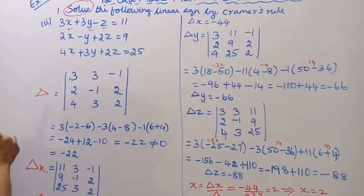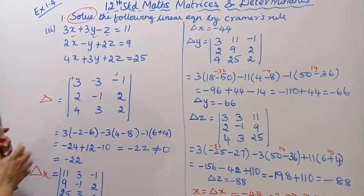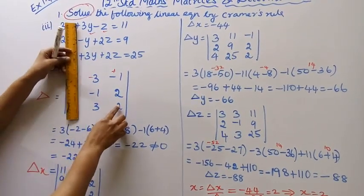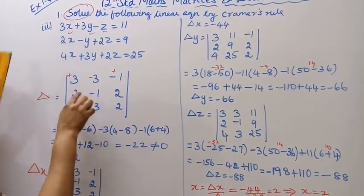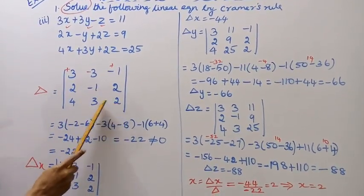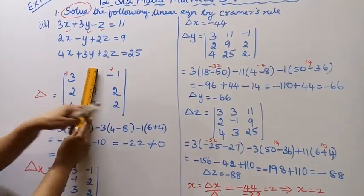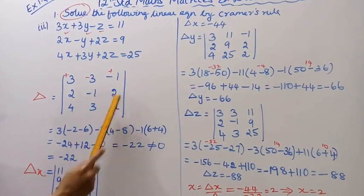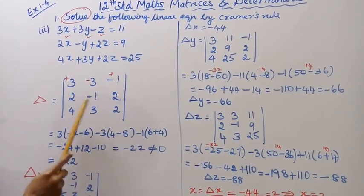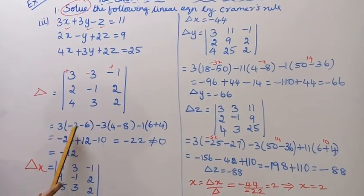This determinant is equal to - this is plus, this is minus, this is plus. 3 times (minus 1 times 2) minus 6, minus 3 times (2 into 2, 4), 4 minus 8, you can replace it, minus 1 times (6 minus 4) plus 4.